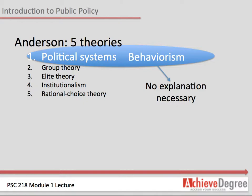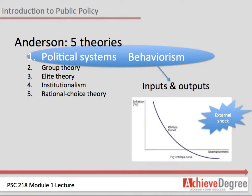One element that is overlooked is an external shock to the system. In the 1970s, the oil producing exporting countries, OPEC, artificially raised the price of oil. Since the United States highly depends on oil, the price of consumer goods increased inflation, despite high unemployment.